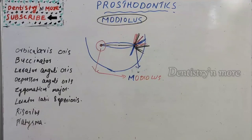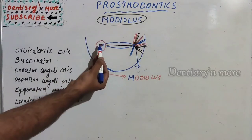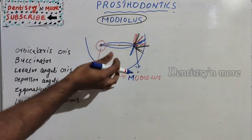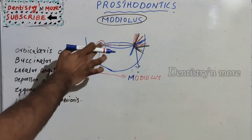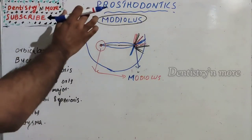Hello everyone, welcome back to another session in dentistry and more. Today's topic in prosthodontics is the modiolus. Modiolus is nothing but a chiasma of facial muscles held together by fibrous tissue, which is located lateral and slightly superior to the angle of mouth. There will be two modioli on the left and right side. It is important in moving the mouth, in facial expression, and also has importance in prosthodontics.